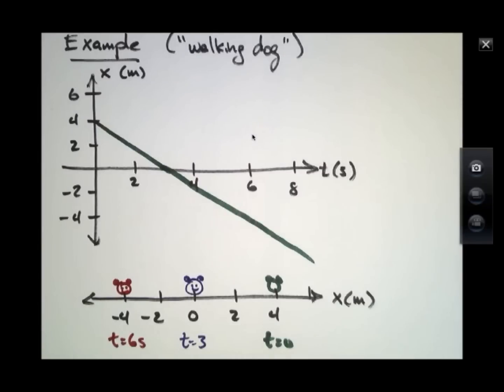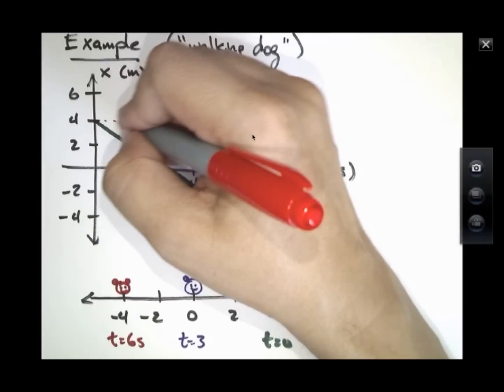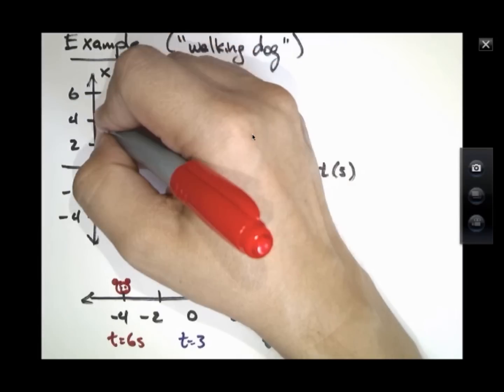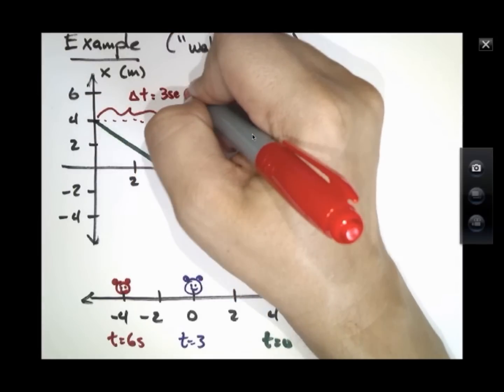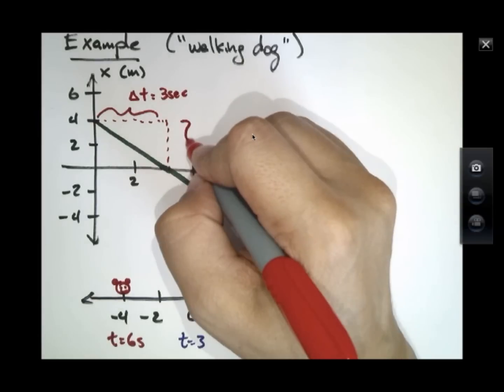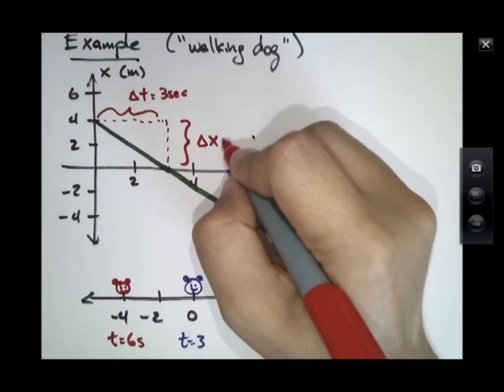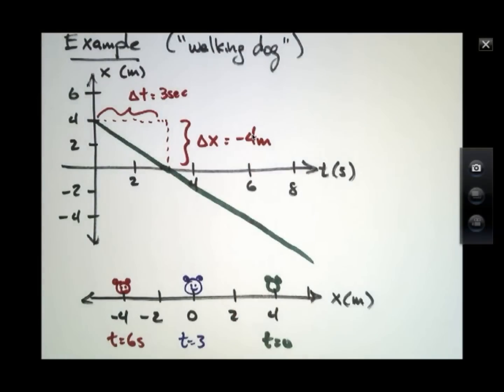Now we can ask how fast it's going, and that's somewhat simple to calculate. If we look at the slope of this line here, in that span of time three seconds, the dog has managed to go a distance delta x of minus four meters. Notice they put a minus sign there because it started at four meters and went down to zero.